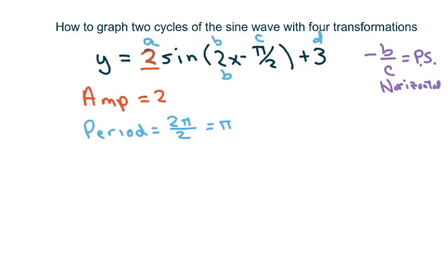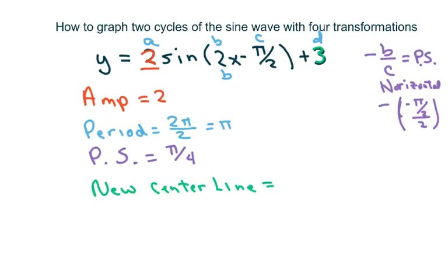So we're going to get negative pi over 2 divided by 2. So our phase shift equals pi over 4. And then I call this the new center line, or midline, new center line equals 3.